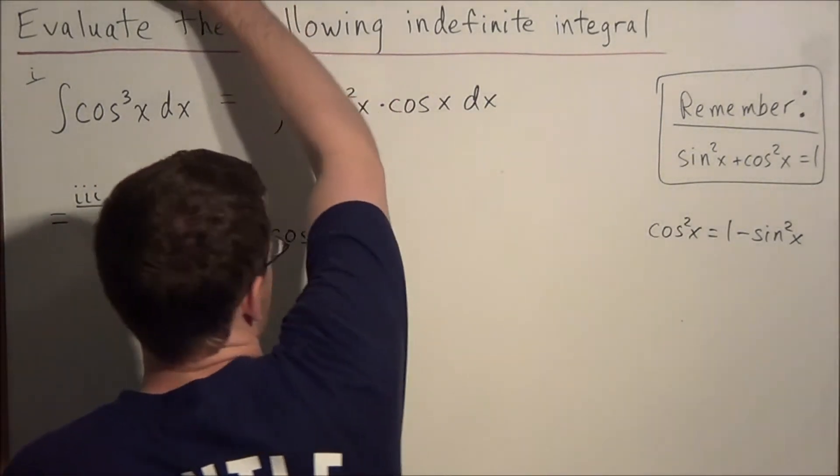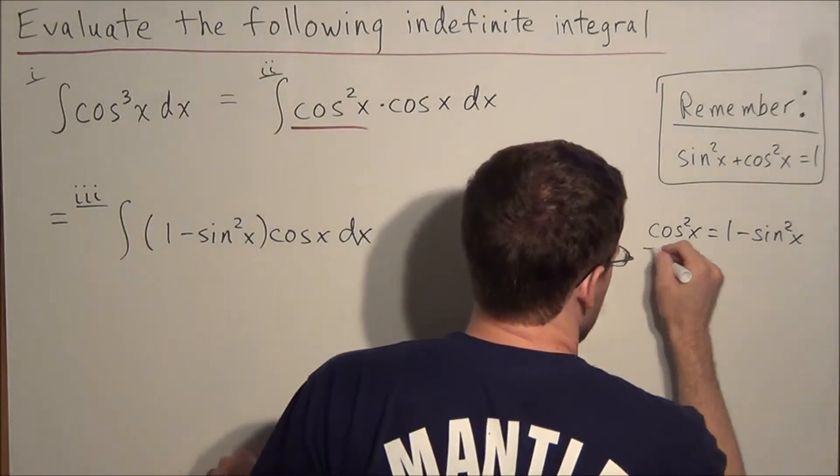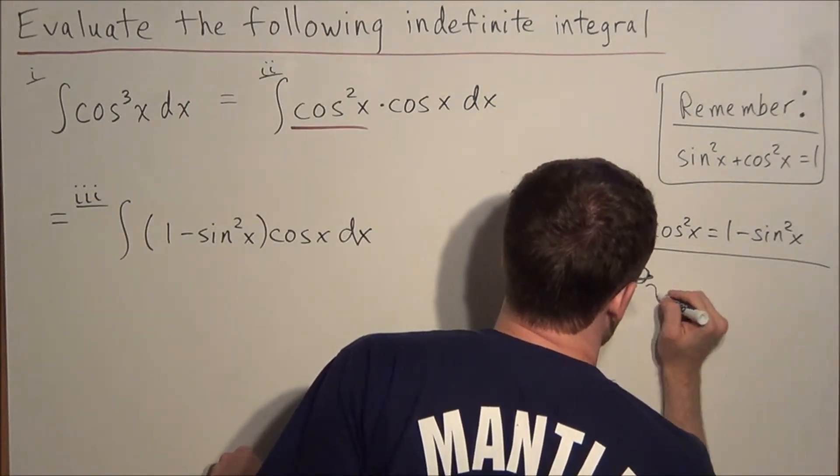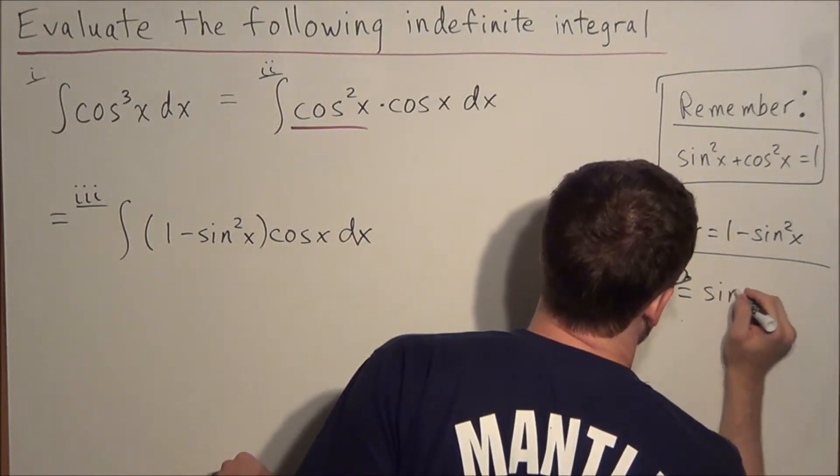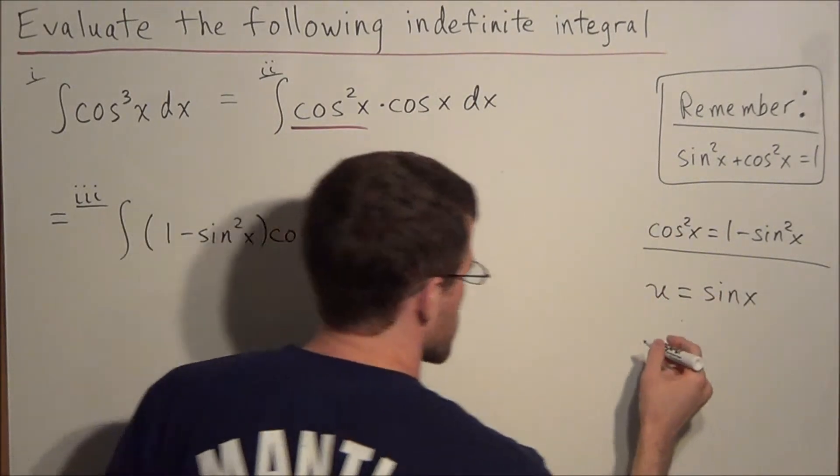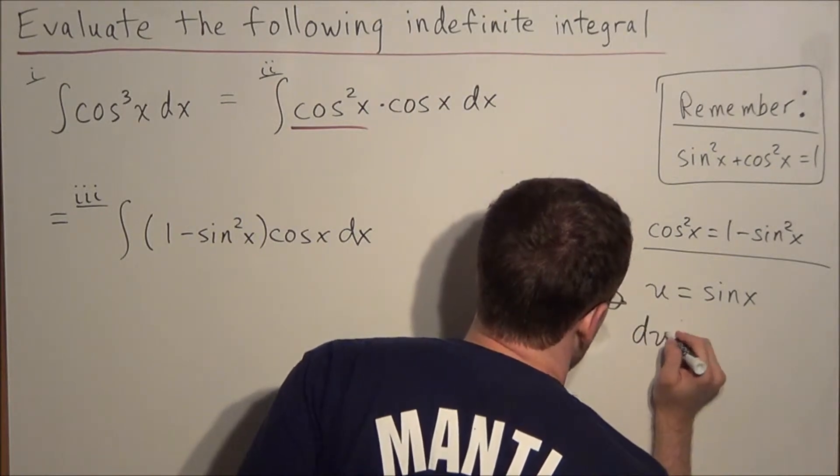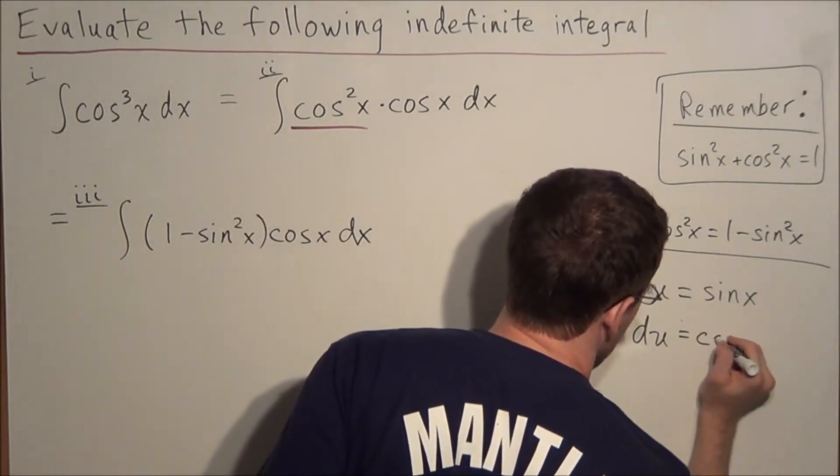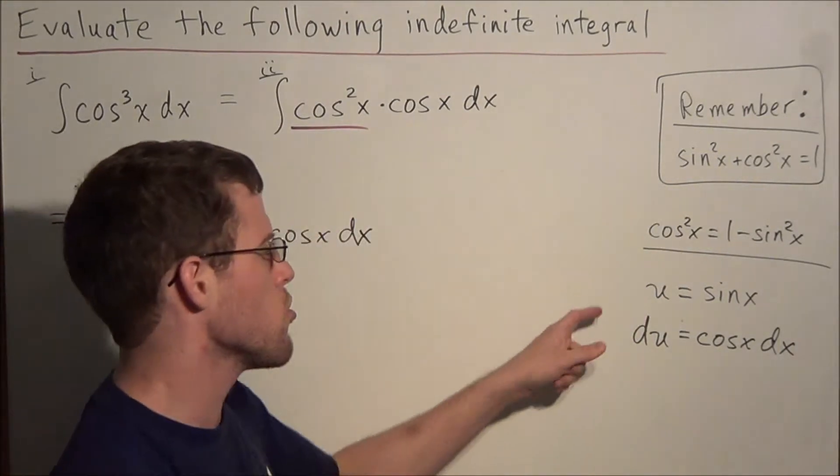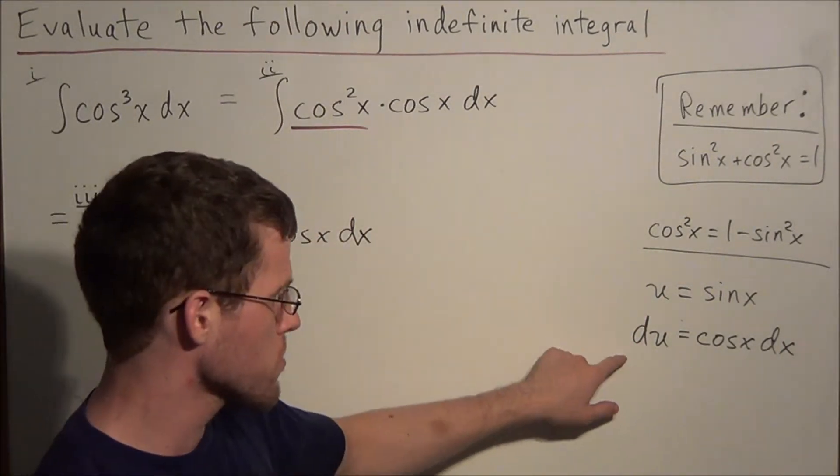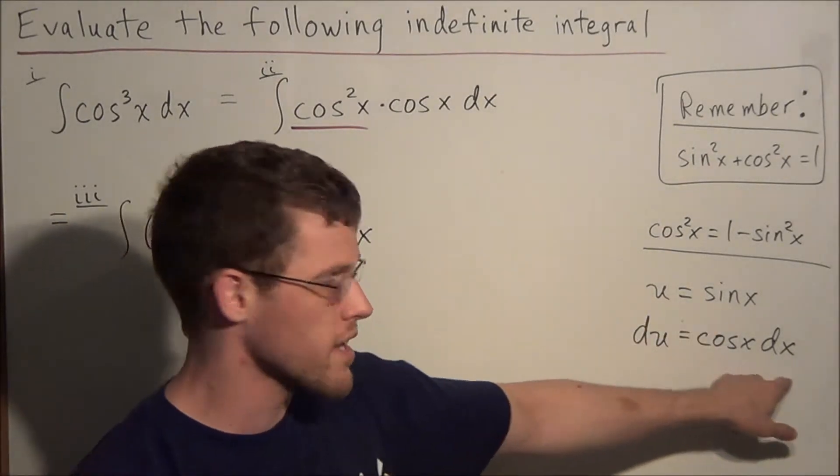So what we're going to do is, we'll just section this off. We're going to set u equal to sine x, and what that allows us to do is we're looking at du is equal to cosine x dx. So remember, all we're doing is finding the derivative of u, which gives us cosine x dx.